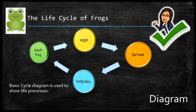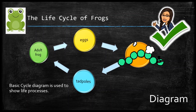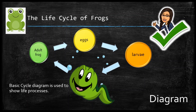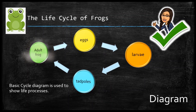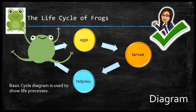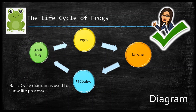This type of basic cycle diagram is used to show life processes. So, you have to understand that a frog starts as an egg, then it becomes a larva and a tadpole, and then it becomes an adult frog which will eventually lay eggs.